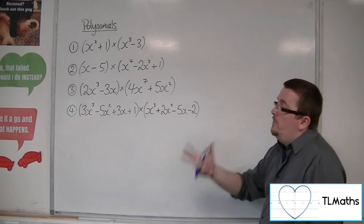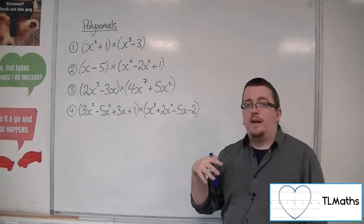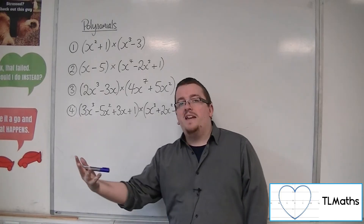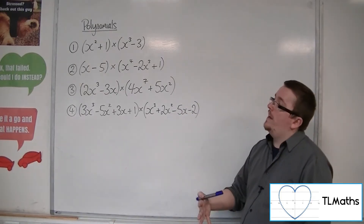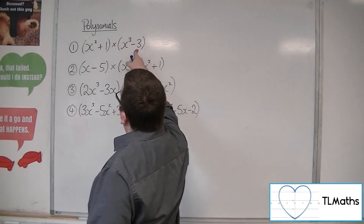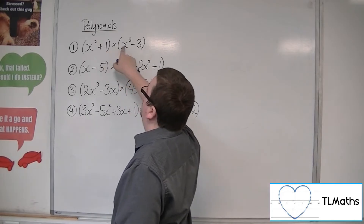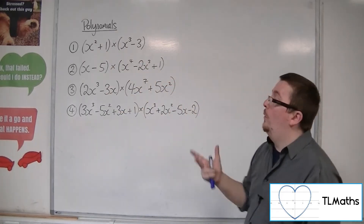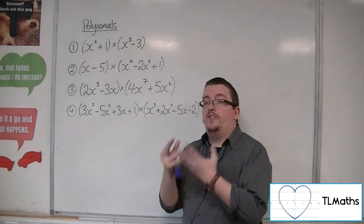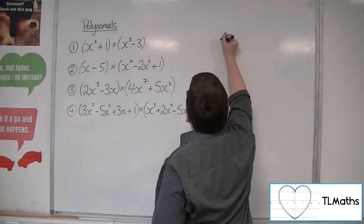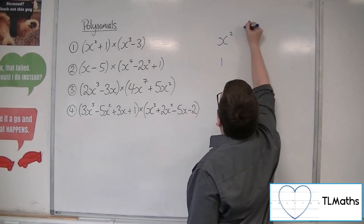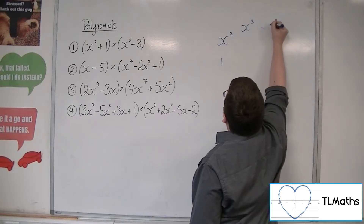What you need to make sure of is that when you are expanding brackets, you multiply everything that is appearing in the left-hand bracket by everything that is appearing in the right-hand bracket. So x squared must multiply with both the x cubed and the minus 3, and the 1 must multiply with the x cubed and minus 3 as well. You can set this up in a table, a grid — x squared and plus 1 multiplied by x cubed and minus 3.